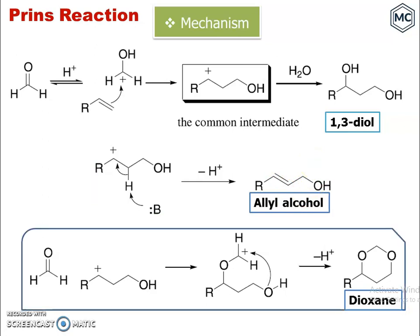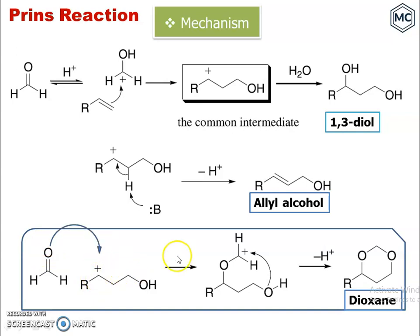For the third possibility, from the common intermediate, the alkene reacts with another molecule of formaldehyde. The lone pair on the oxygen of formaldehyde attacks the carbocation, forming a double bond where the oxygen gets a positive charge. This gives another resonance hybrid structure.